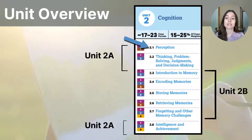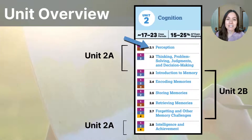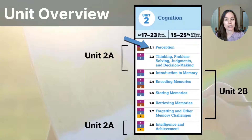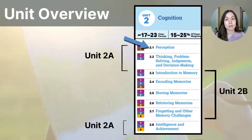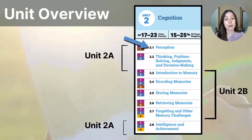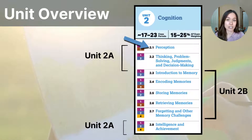On this slide, you can see the complete outline for Unit 2. Notice that this unit is titled Cognition, and there is a lot of important information here. I've decided to break up this unit into two parts, 2A and 2B. 2B will focus almost entirely on memory, while 2A will focus on perception, thinking, problem-solving, decision-making, intelligence, creativity, and achievement.